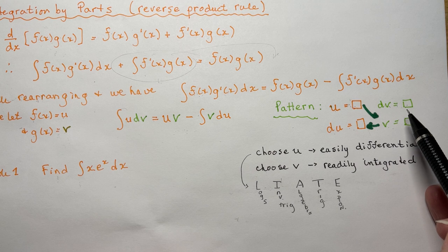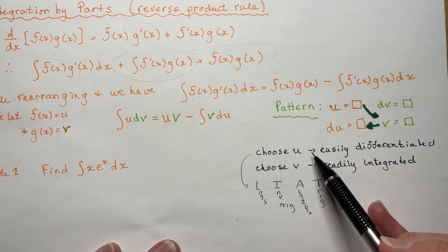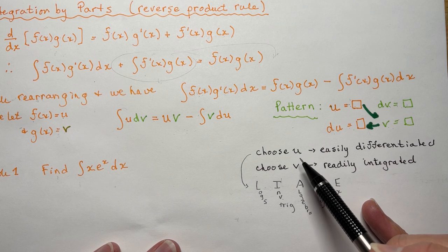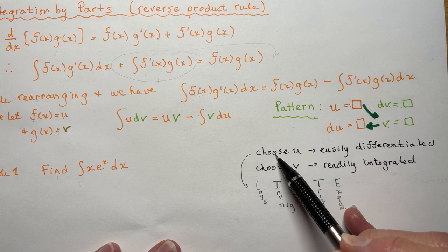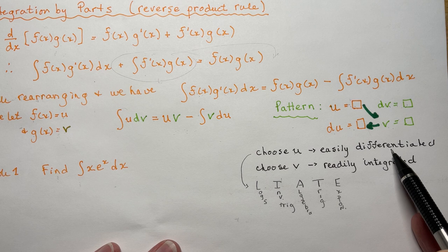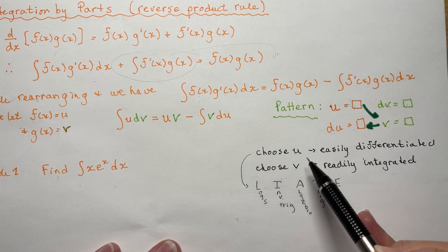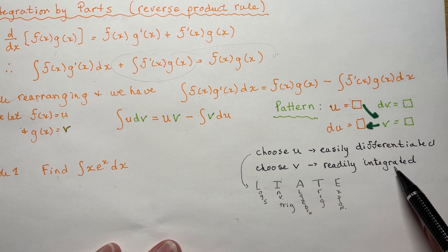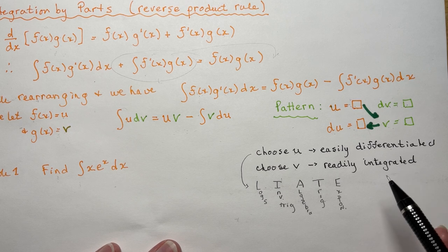Now another little trick to help you decide which function to choose as u and which as v: you want to choose u to be something that's easily differentiated — you can take the derivative of it easily — and choose v to be something that is readily integrated. So we'll see these examples as we go through.